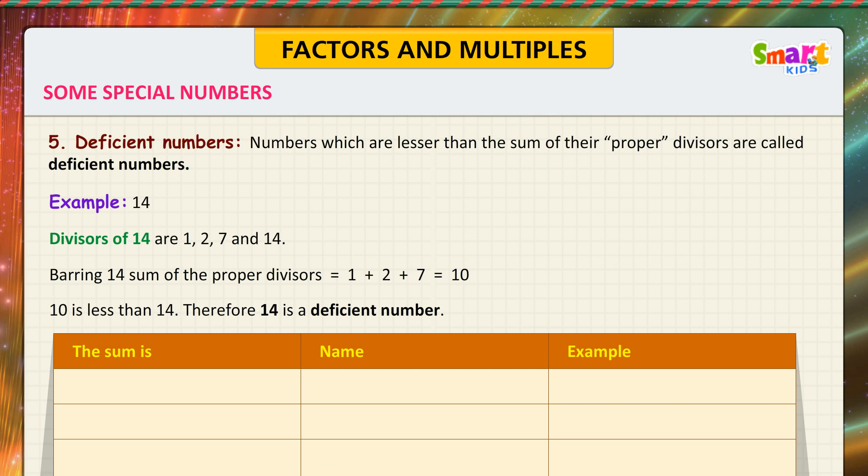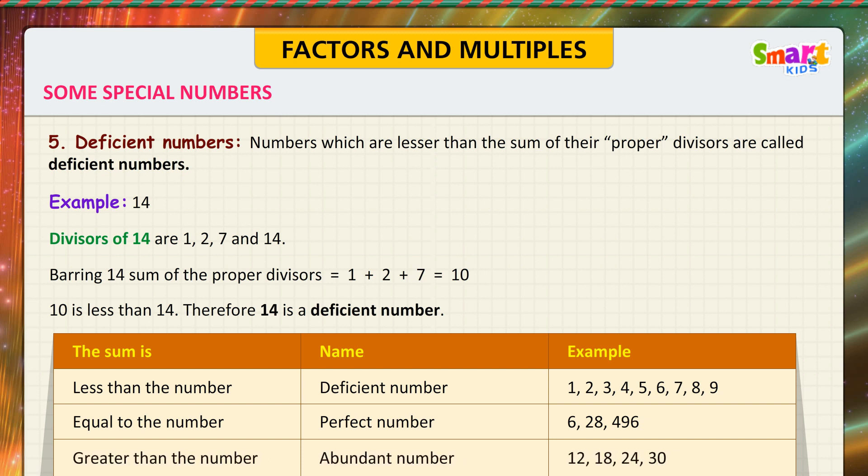Look at the table. The sum is less than the number: Deficient number. Examples: 1, 2, 3, 4, 5, 7, 8, 9. Equal to the number: Perfect number. Examples: 6, 28, 496. Greater than the number: Abundant number. Examples: 12, 18, 24, 30.